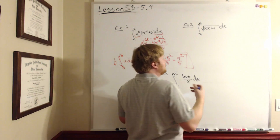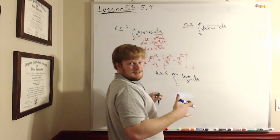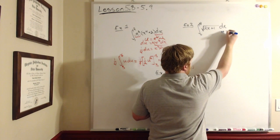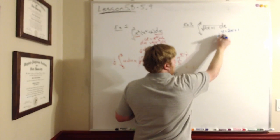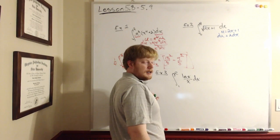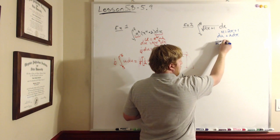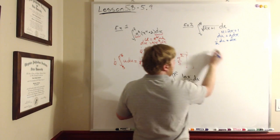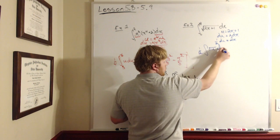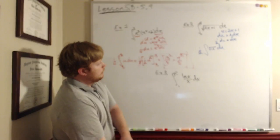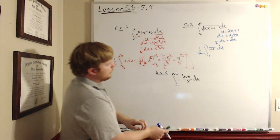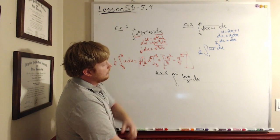For the second example, there's only one expression inside of something else, so u must be two x plus one. Let u equal two x plus one. Then du is two dx, but I only have one dx, so we divide both sides by two. My bounds change: when x is zero, u is one; when x is four, u is nine.